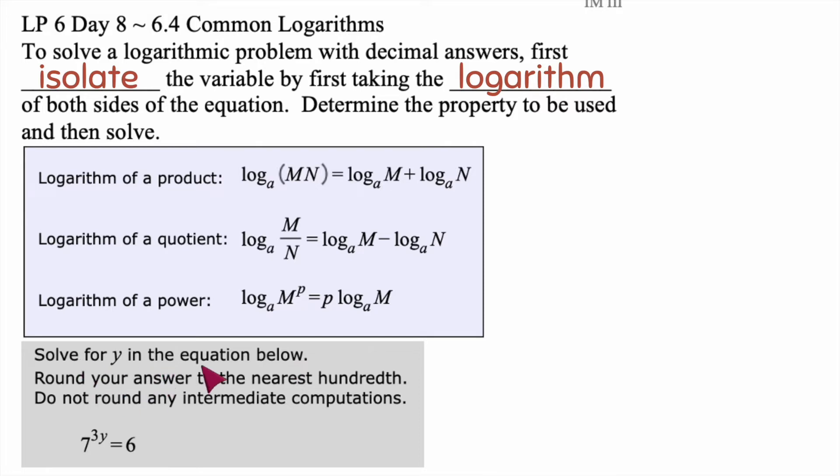This says solve for y in the equation below, round your answer to the nearest hundredth, do not round any intermediate computations. That means don't round until you get to the very end. That's what intermediate computations mean, because that can cause a domino effect of rounding if you round too early.